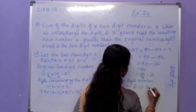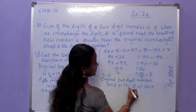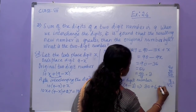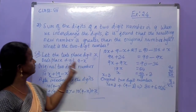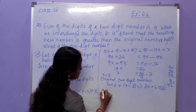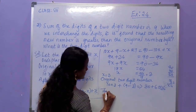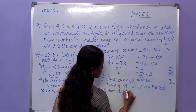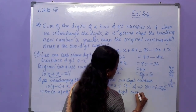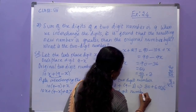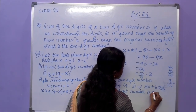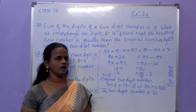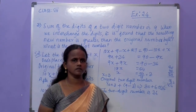30 plus (9 minus 3) equals 30 plus 6, which equals 36. The two-digit number is 36. This is the answer.